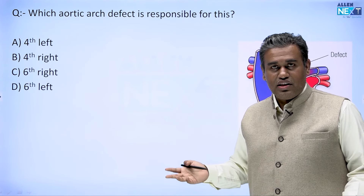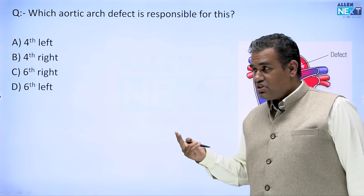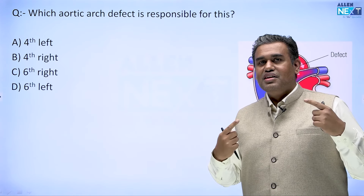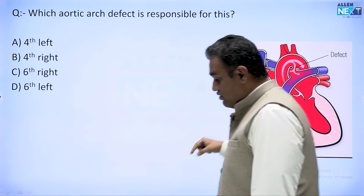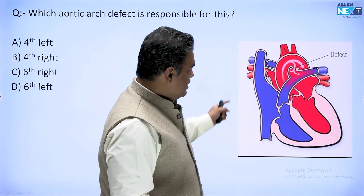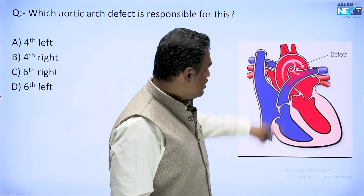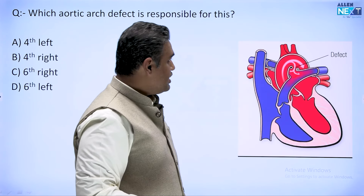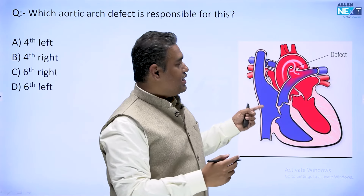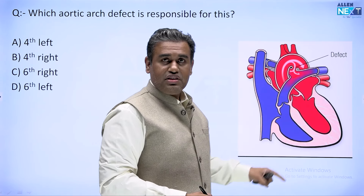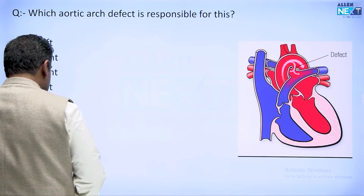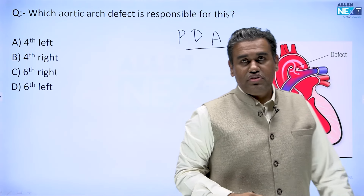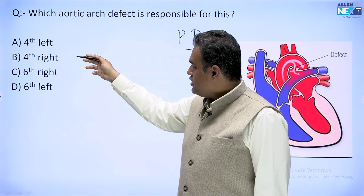This topic is becoming a high-yield topic in all exams. Around two or three years back, a question came on pharyngeal arches — why the left recurrent laryngeal nerve has a longer course. That was also from the pharyngeal arch. Now this question asks: which aortic arch defect is responsible for the image shown? In the image, there is a communication between the left pulmonary artery and the arch of the aorta — that is the ductus arteriosus. After birth, it must close and becomes the ligamentum arteriosum. So this defect is patent ductus arteriosus (PDA). The options are left fourth, right fourth, right sixth, and left sixth arch artery.